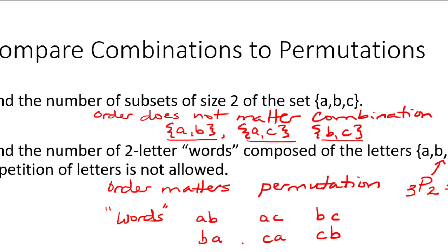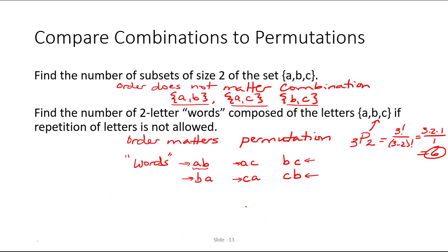But on the other hand, when we're constructing words where the order matters, we have twice as many possibilities. We have the ab, the ac, and the bc. But because order matters, we have the number of ways to arrange two letters, which is two ways. So that could be ab or ba. This one could be ac or ca. This one's bc or cb. All of these are different possible permutations of two of the letters from that set. So in fact, the number of combinations could be calculated by dividing the number of permutations, 3P2, divided by the number of ways to arrange two letters, which is 2 times 1 or 2 factorial.